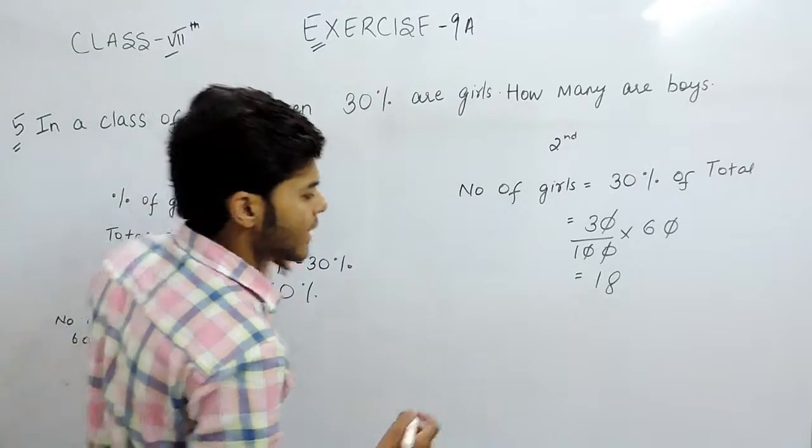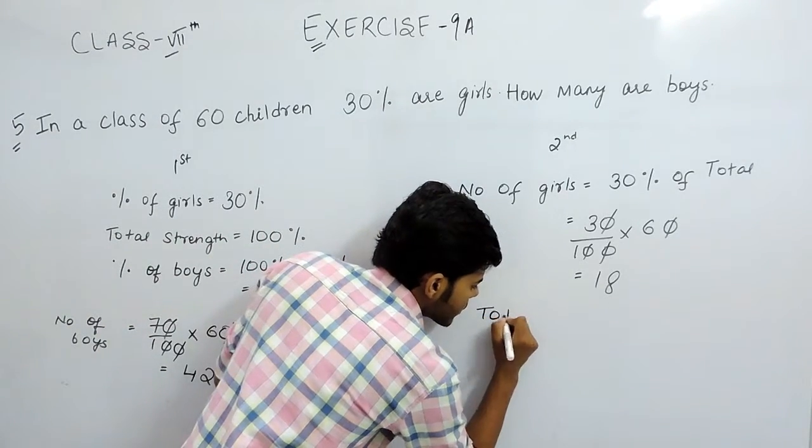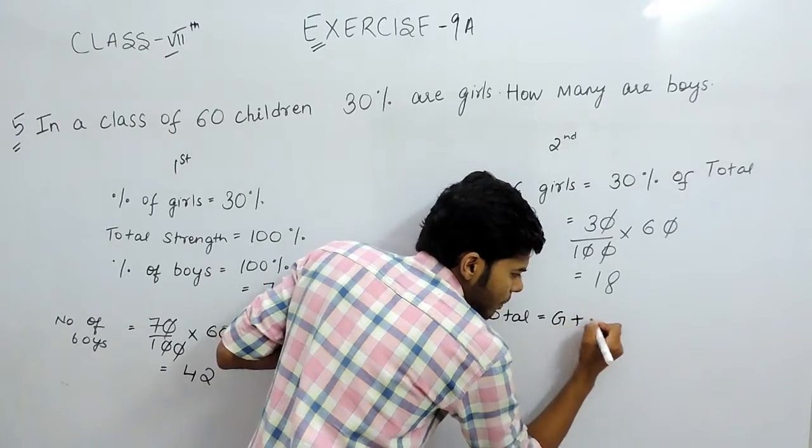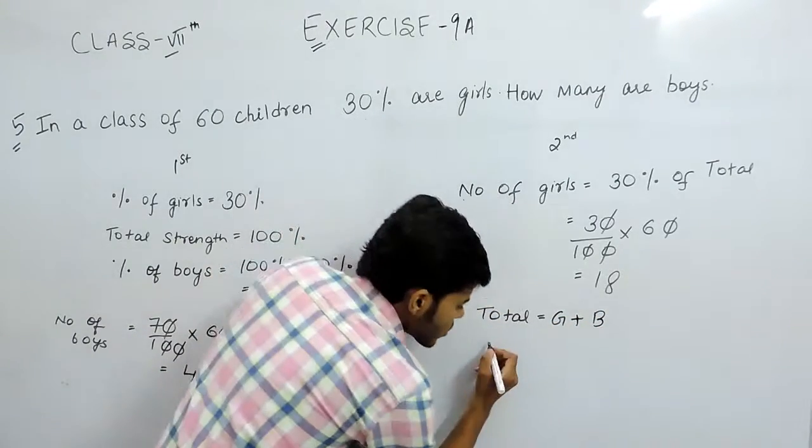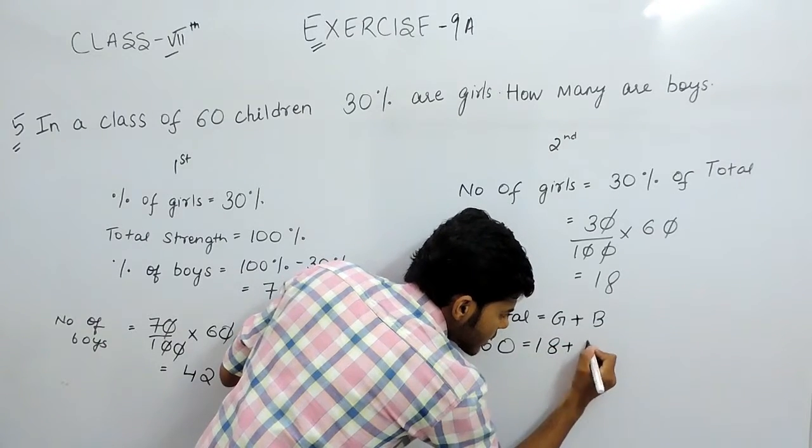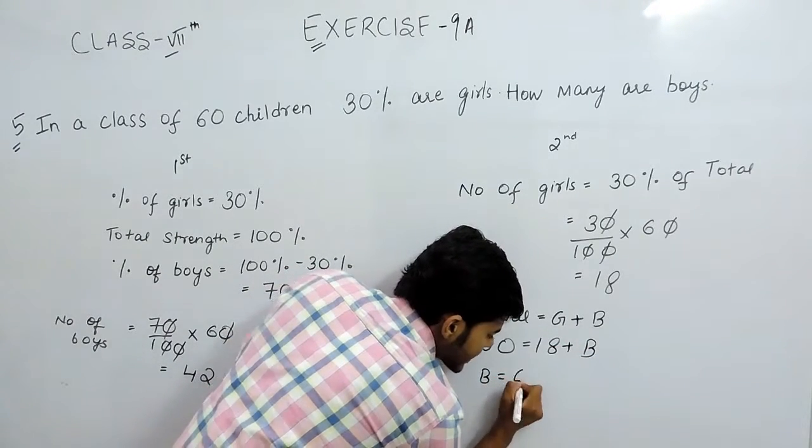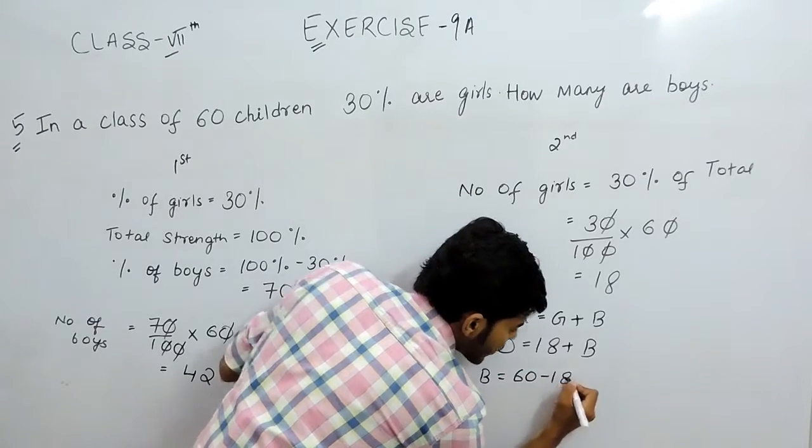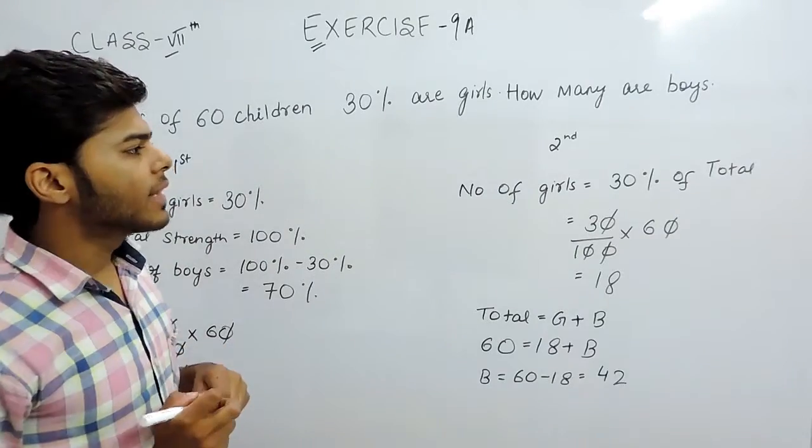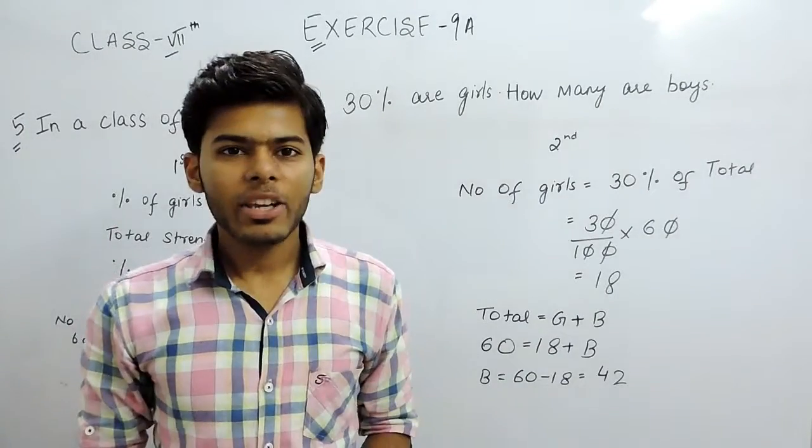Total strength is 60. Total strength will be equal to girls plus boys. So 60 will be equal to 18 plus boys. Therefore, boys will be 60 minus 18, which equals 42. This is how you can solve these types of questions. Thank you.